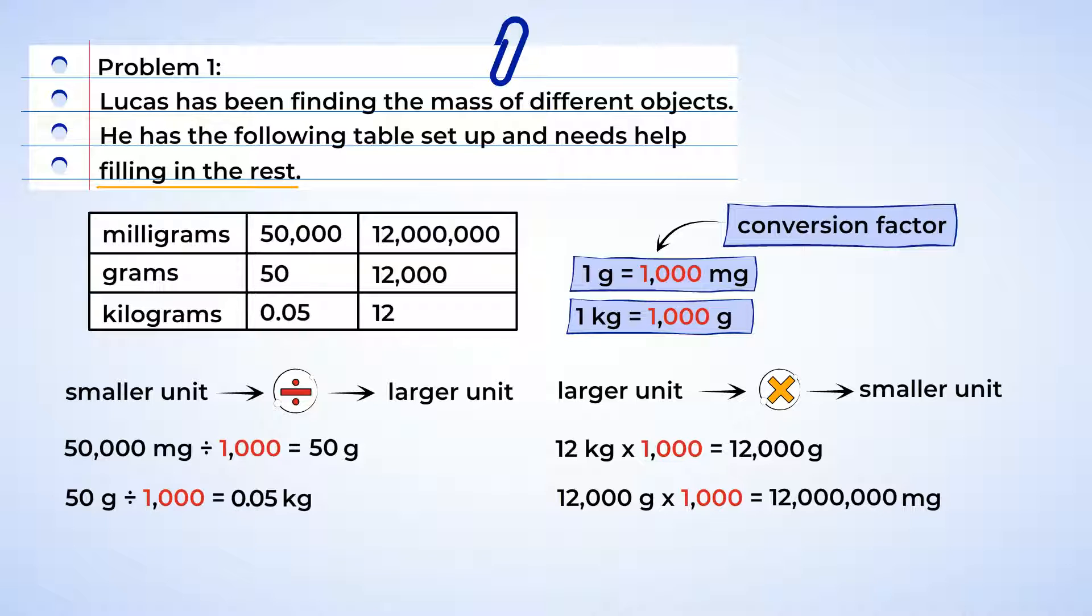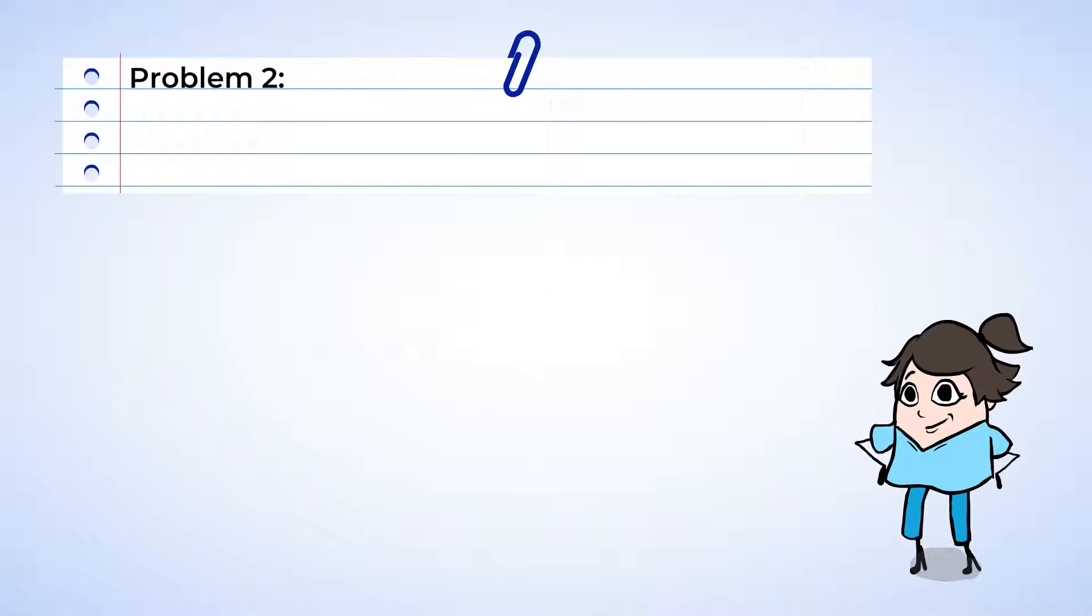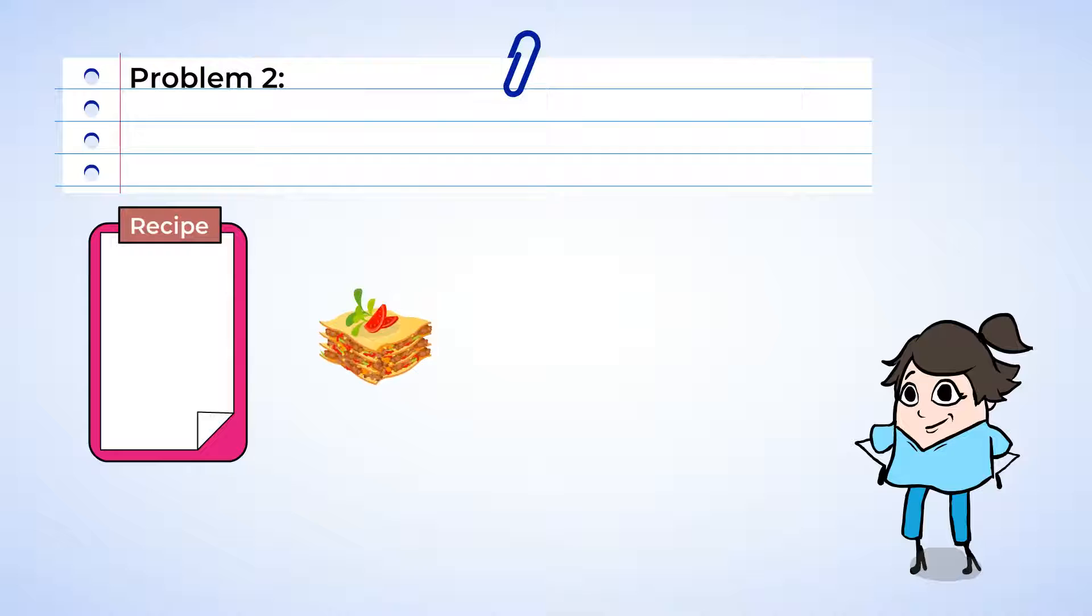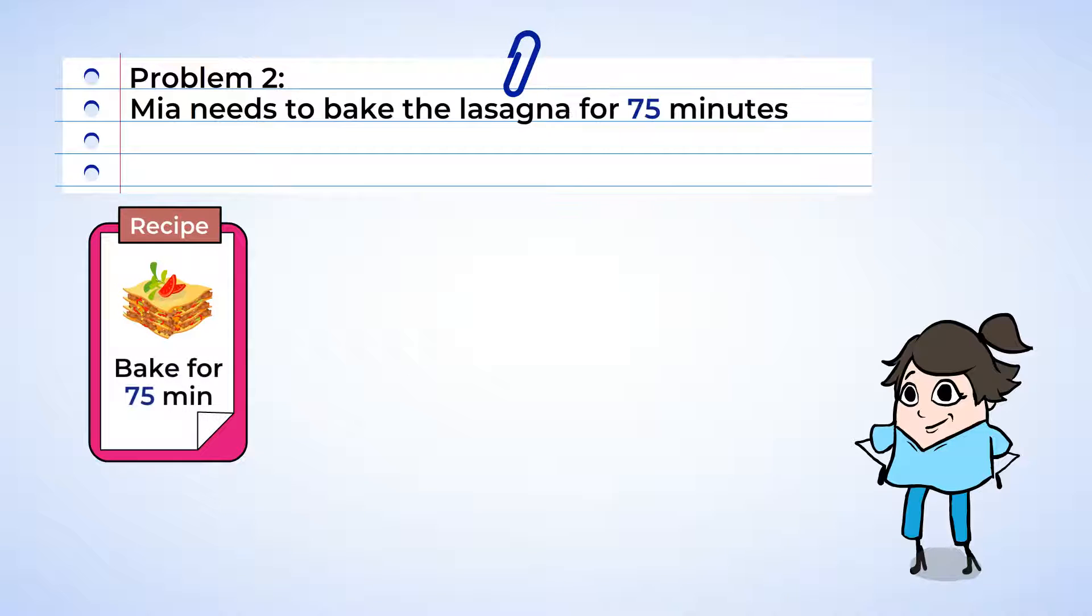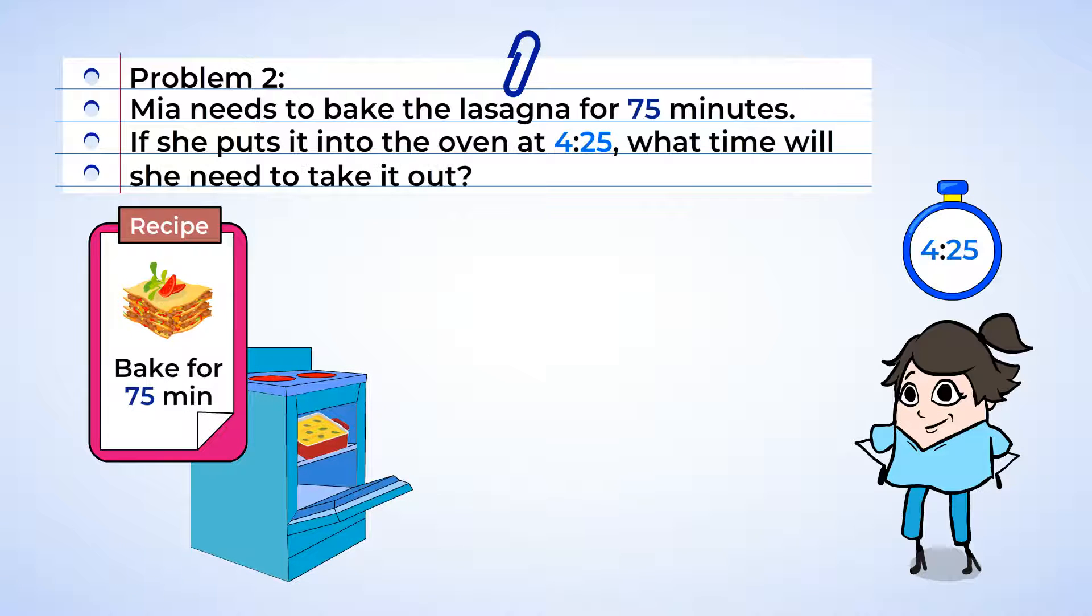I feel nice and warmed up. What do you say we go help Mia? Smells like lasagna! According to the recipe, Mia needs to bake her lasagna for 75 minutes. That's too long, if you ask me. If she puts it into the oven at 4:25, what time will she need to take it out?